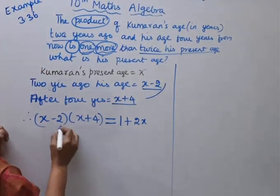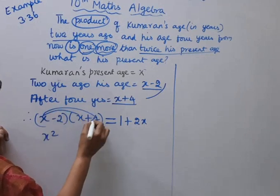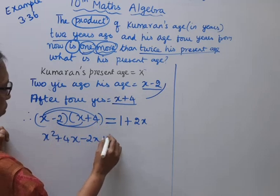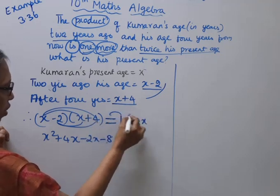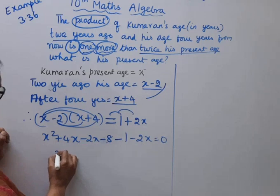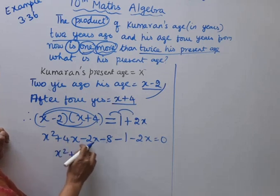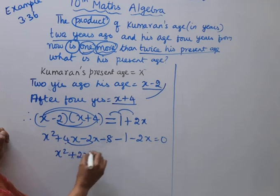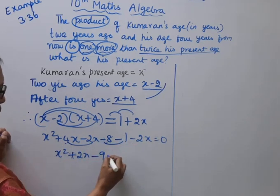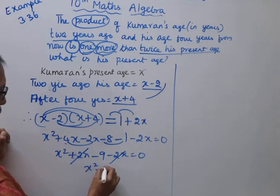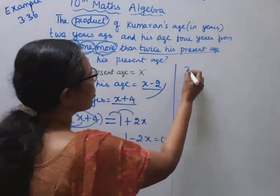Expanding: x squared plus 4x minus 2x minus 8 equals 1 plus 2x. Simplifying: x squared plus 4x minus 2x minus 8 minus 1 minus 2x equals 0. Combining like terms: x squared minus 9 equals 0.